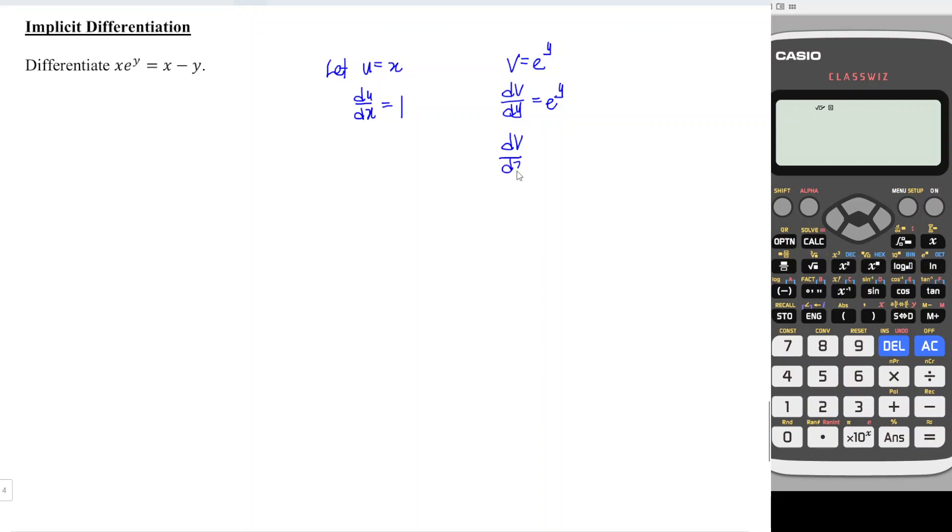But doesn't matter, we just apply the chain rule. So dv/dx is equal to dv/dy times dy/dx. What we need is dx not dy, so we cancel dy and we're left only with dx.